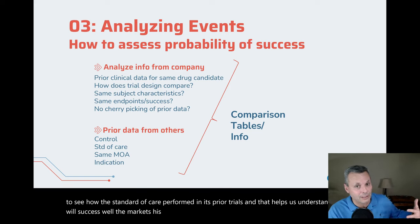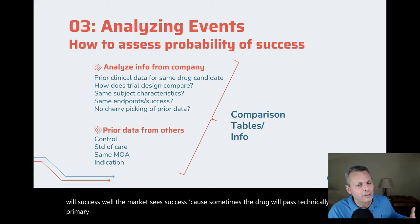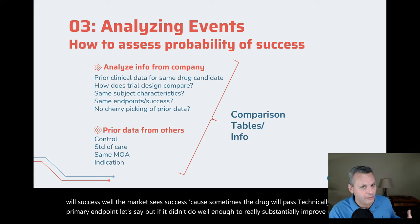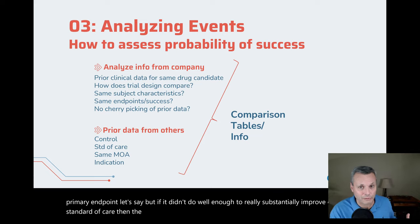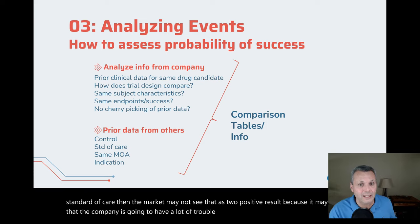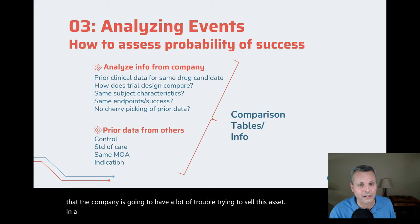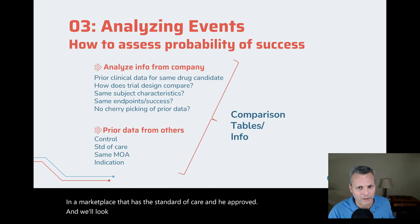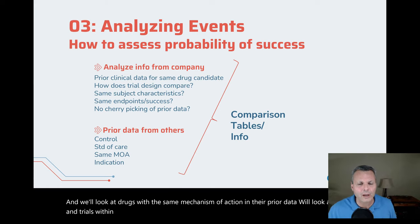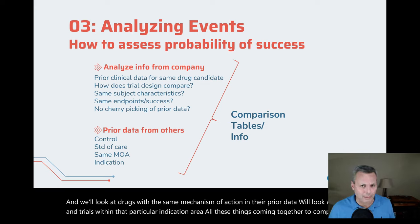Sometimes a drug will technically pass the primary endpoint, but if it didn't substantially improve on the standard of care, the market may not see that as too positive a result, because it may mean the company will have trouble selling the asset in a marketplace that has the standard of care already approved. We'll also look at drugs with the same mechanism of action and their prior data, and drugs and trials within that particular indication area — all these things come together to assess the probability of success.